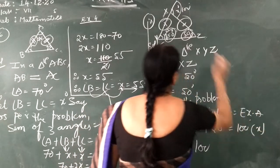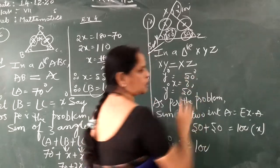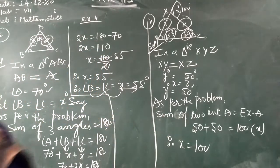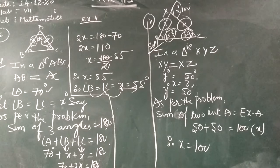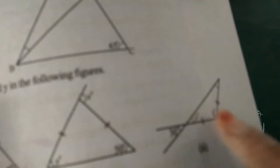The exterior angle is given as X, so X equals 100 degrees and Y equals 50 degrees. These two problems follow the same method. Now the third problem: here one angle is given as 30 degrees. Y is also 30 because these two are vertically opposite angles — vertically opposite angles are equal. You have to find the X value. Name this triangle as PQR.